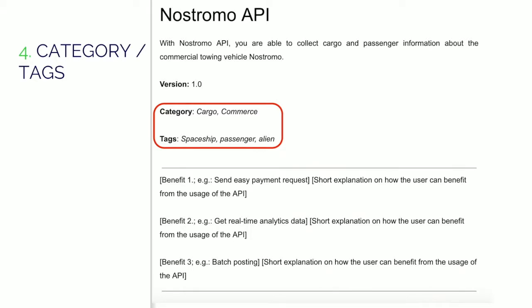For example, the category is Hardware and Sensors here. When there is a description page for Nostromo API on the portal, and when the user clicks on a category — for example, the Hardware category — the system automatically filters and displays all the APIs that belong to this category. And tags, which are good for SEO, so it is great to have expressions that describe the given API on the API description page.